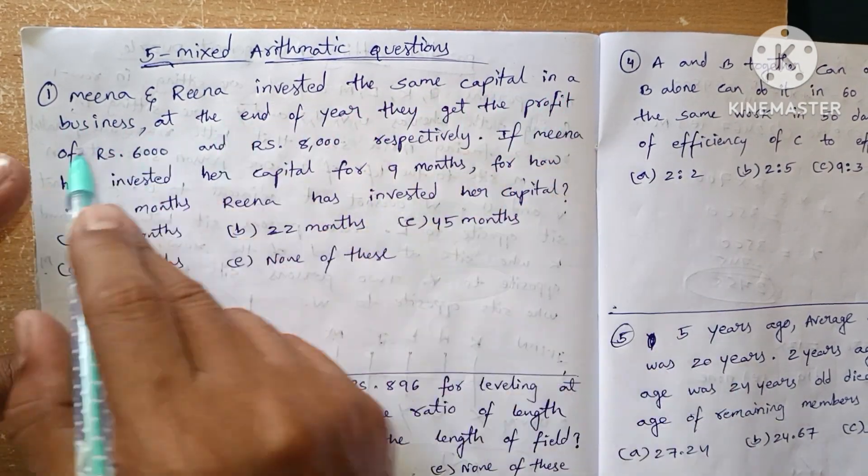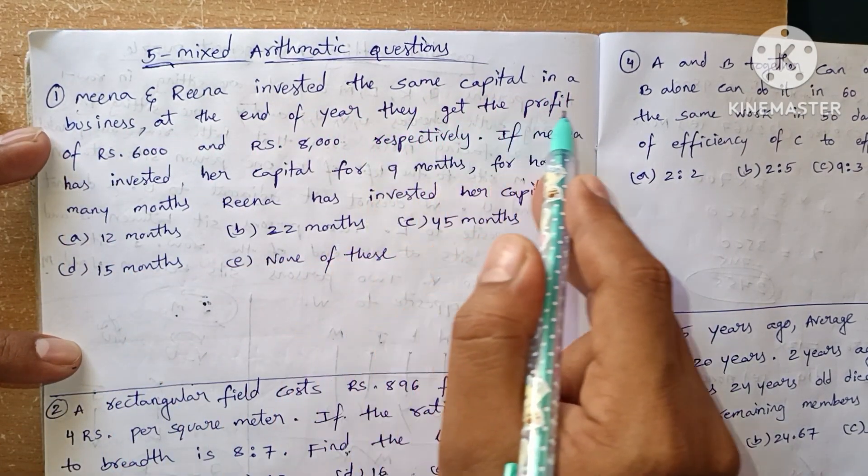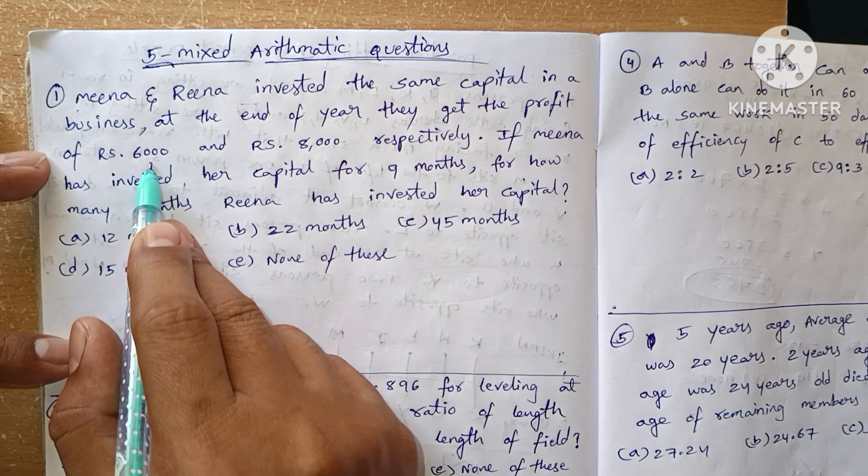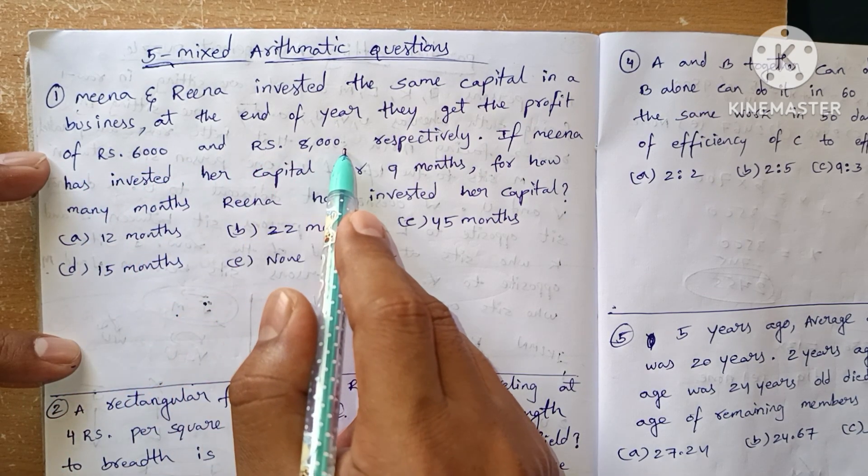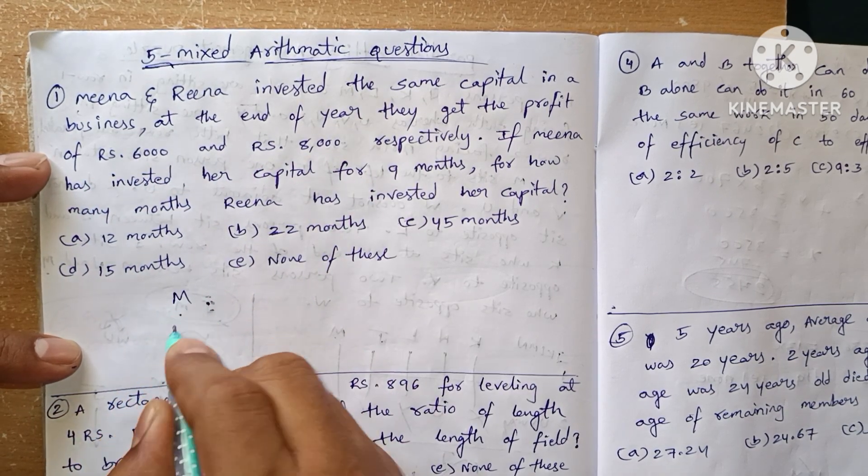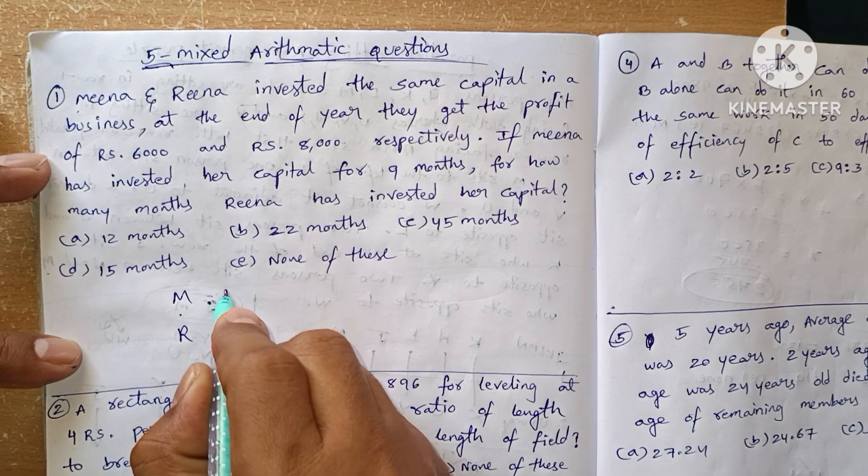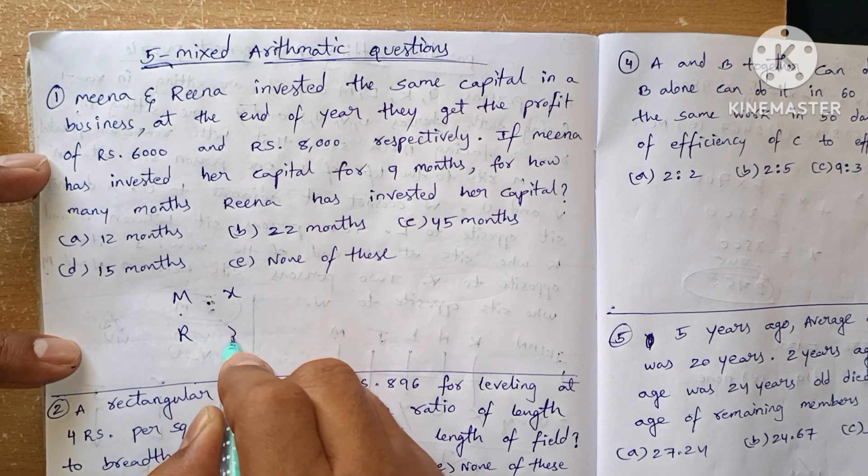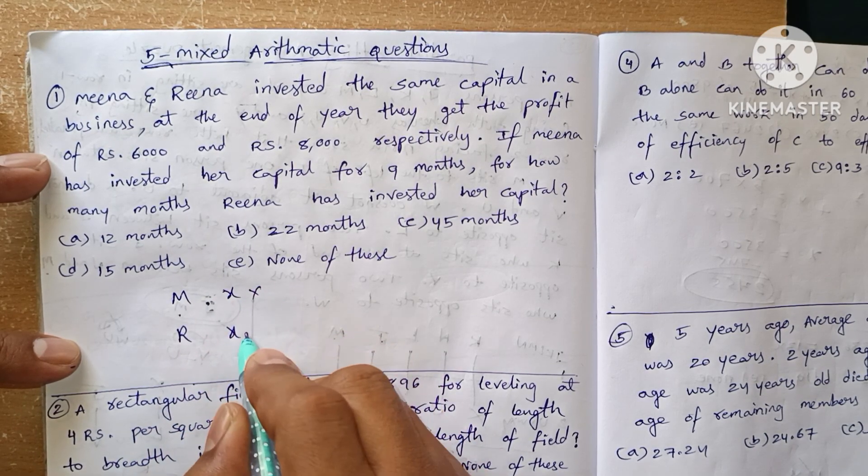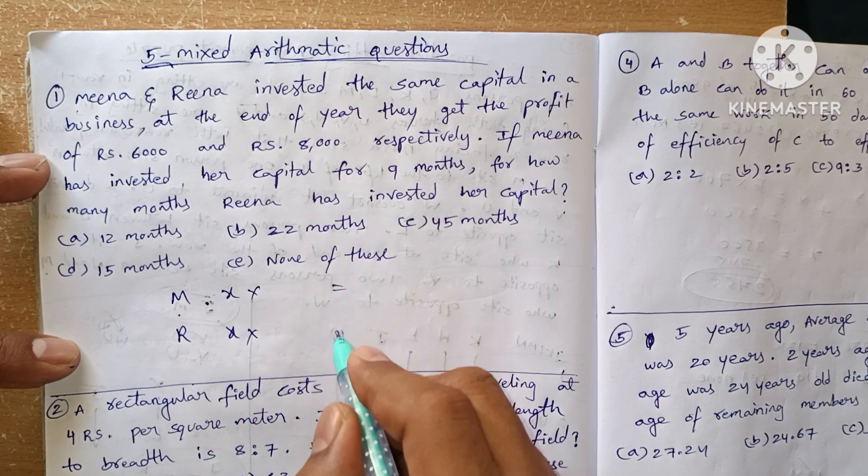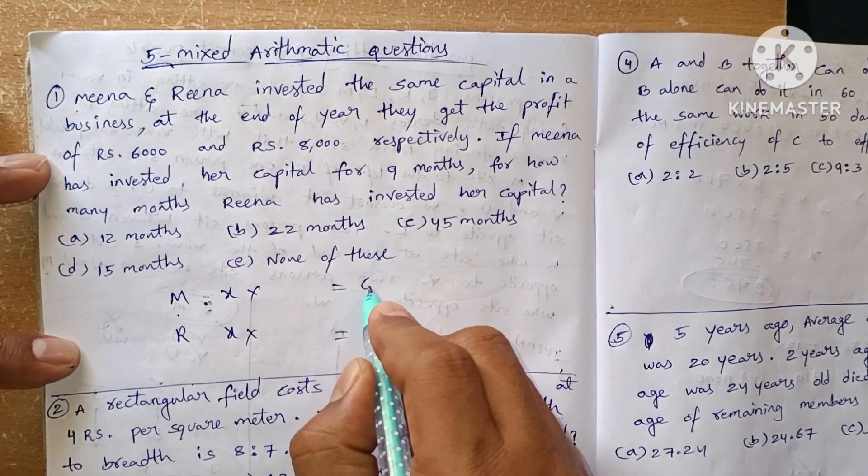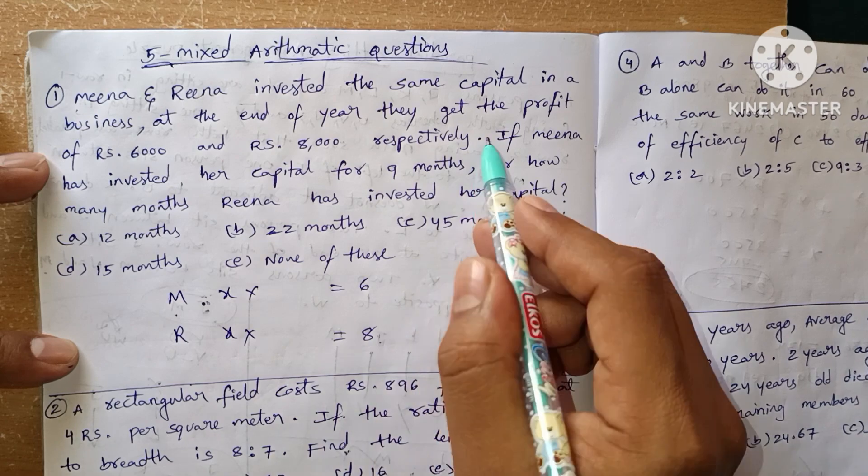Mina and Rena invested the same capital in the business. At the end of the year, they got the profit of 6,000 rupees and 8,000 rupees. So Mina and Rena invested the same capital but for different time periods. Their profits are in the ratio of 6 to 8.